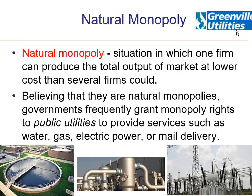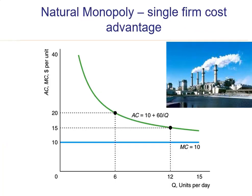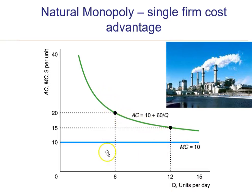In our area, Greenville Utilities is a natural monopoly because they are the only provider of electricity in the city of Greenville. Using cost curves, one example of a natural monopoly is a situation where average cost continues to decline as you expand output, approaching the marginal cost of production.